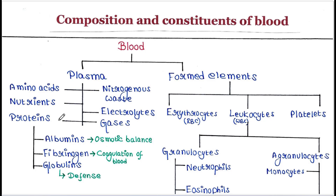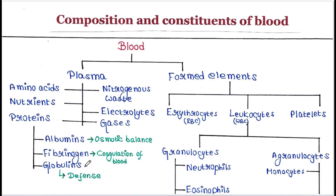Plasma proteins include albumins, fibrinogens, globulins, etc. Albumins maintain the osmotic balance. Fibrinogen helps in blood coagulation, and globulins help in defense.